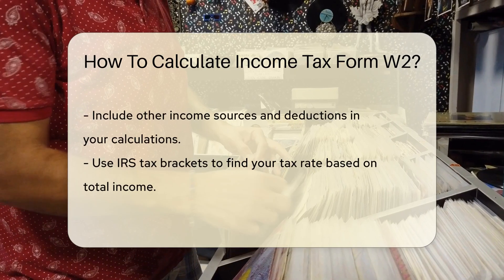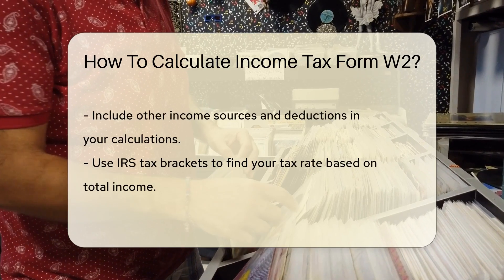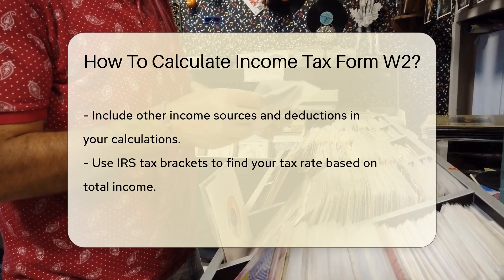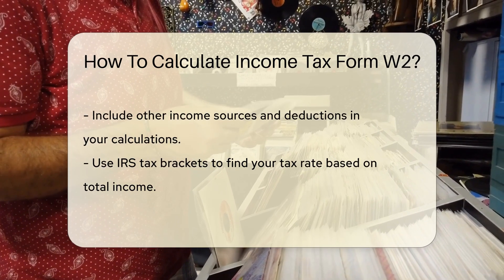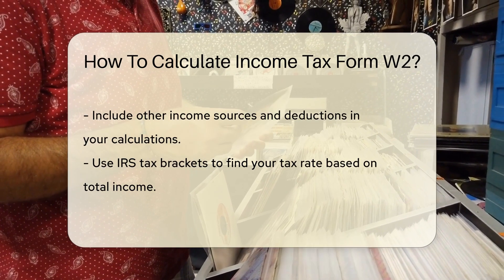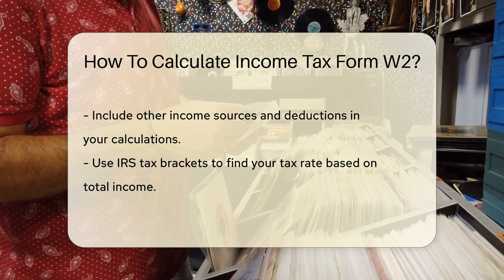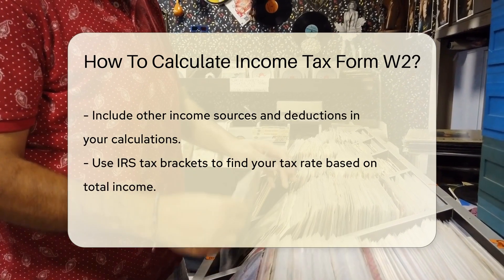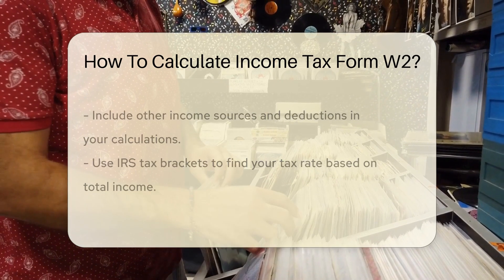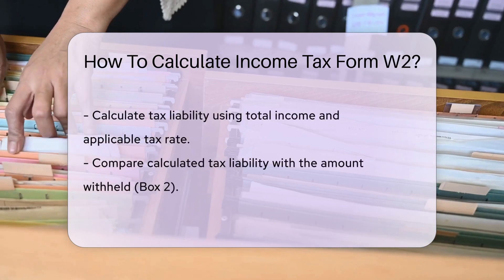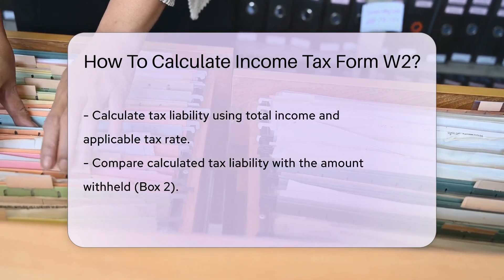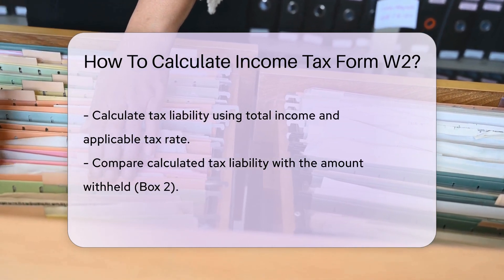Then, factor in any other income sources and deductions that may impact your taxable income. Utilize the IRS tax brackets to determine your tax rate based on your total income. After calculating your tax liability, compare it to the total federal income tax withheld shown in Box 2 of your W-2.